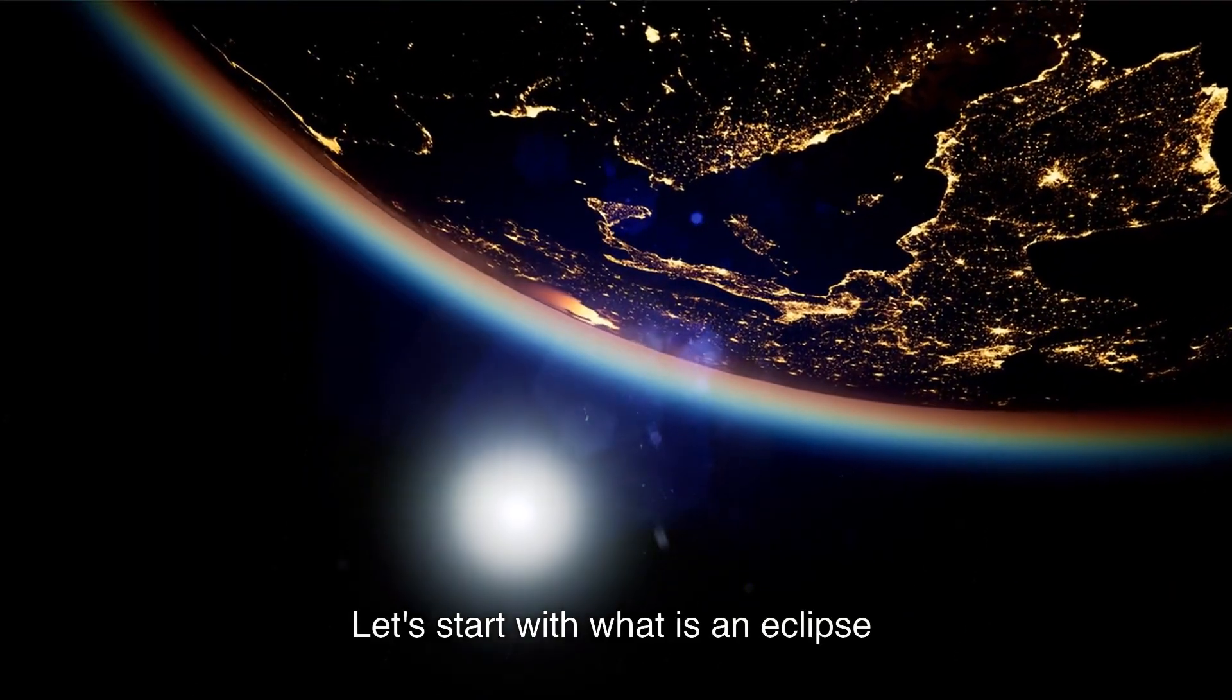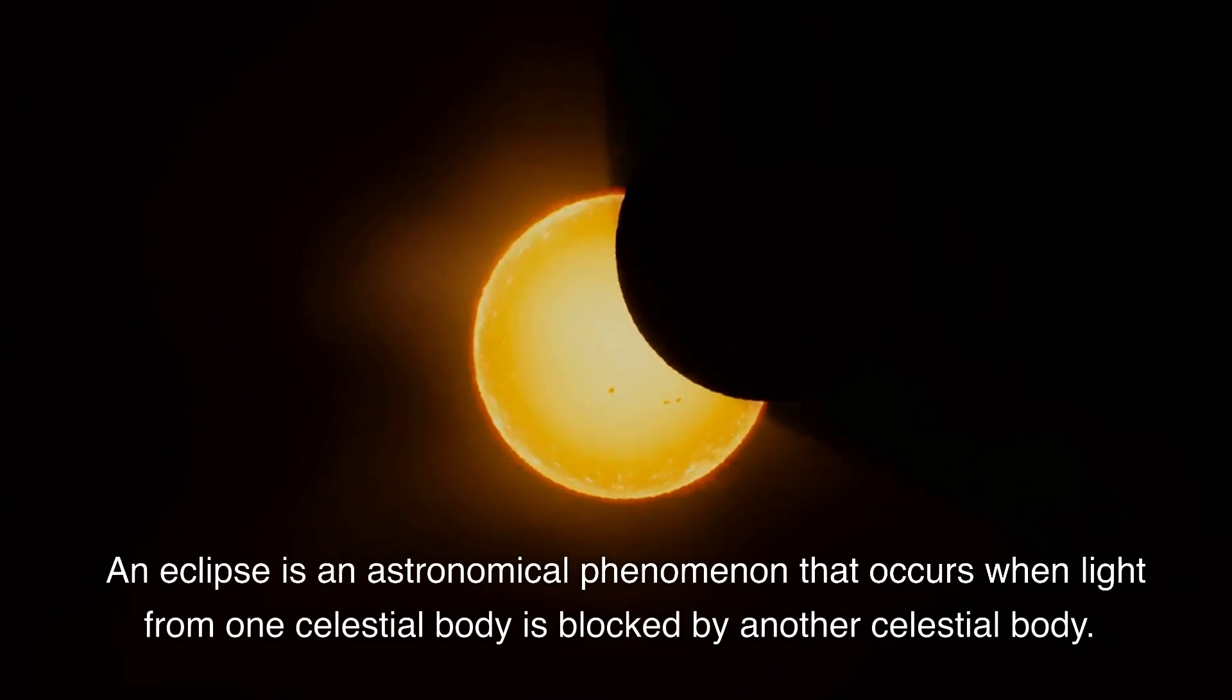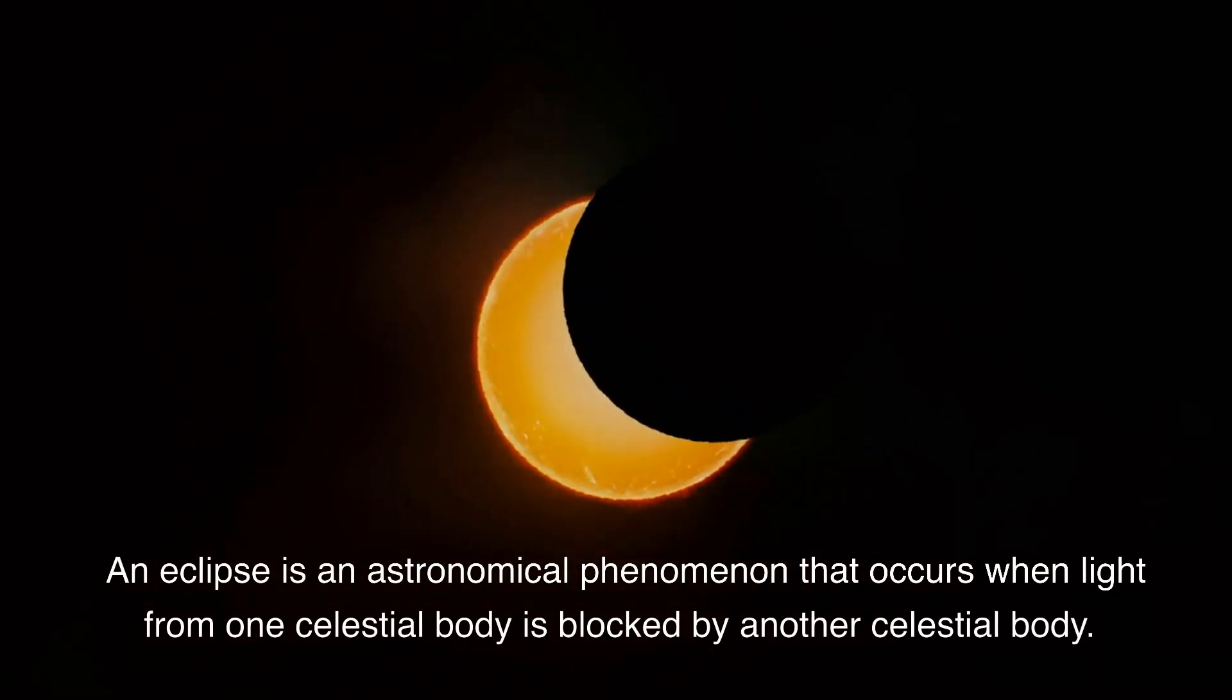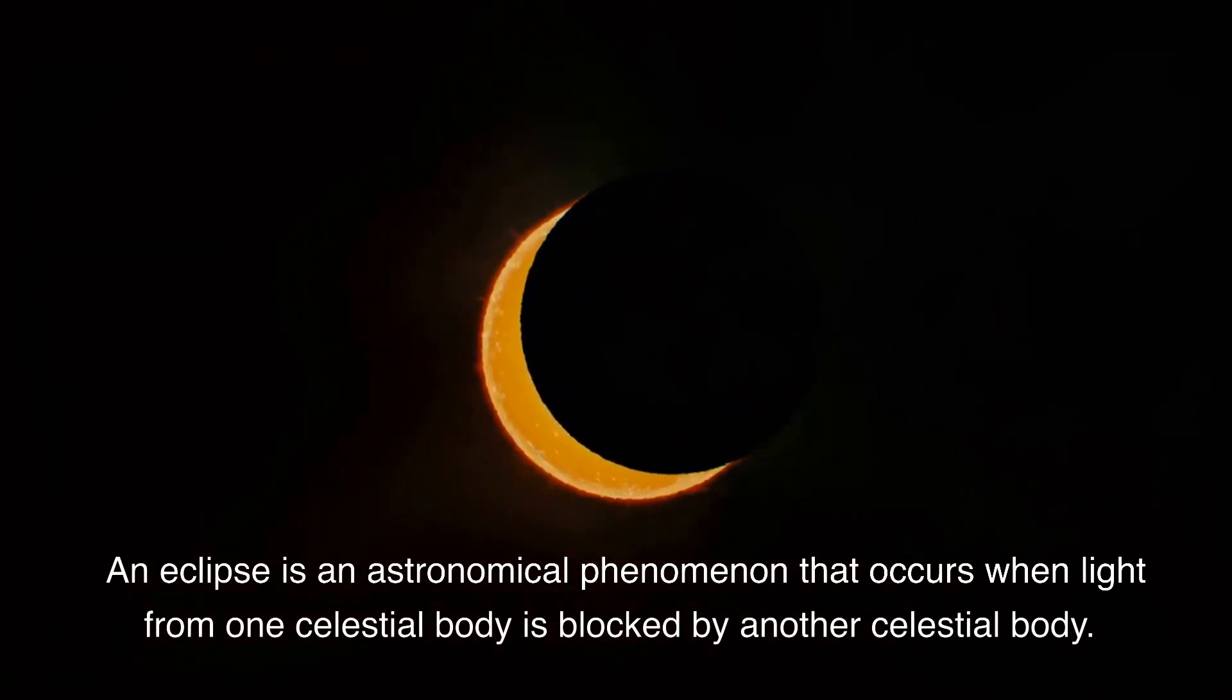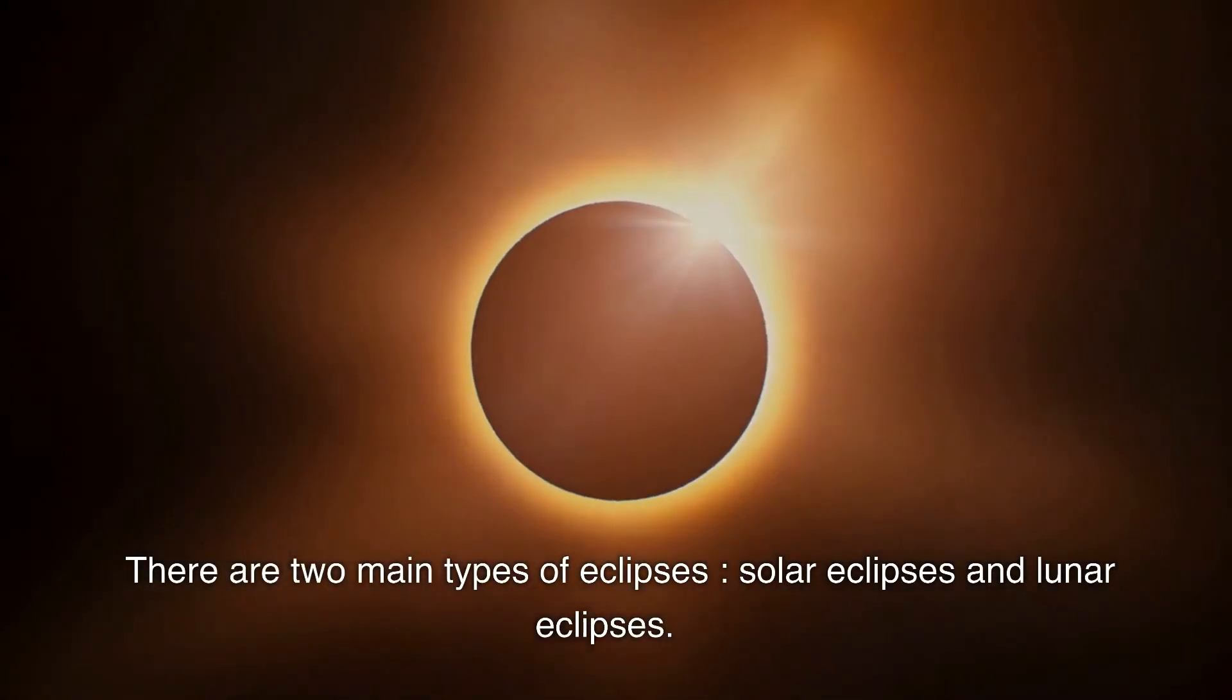Let's start with what is an eclipse. An eclipse is an astronomical phenomenon that occurs when light from one celestial body is blocked by another celestial body. There are two main types of eclipses, solar eclipses and lunar eclipses.